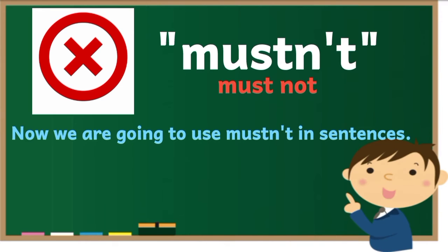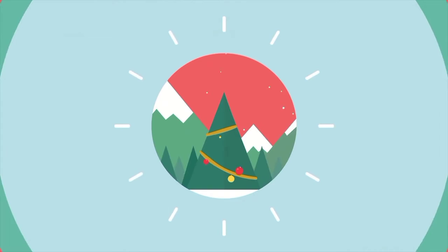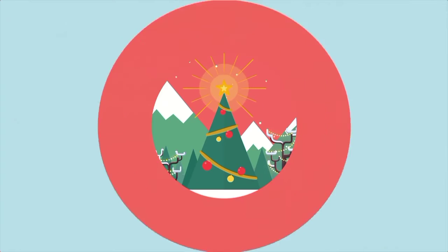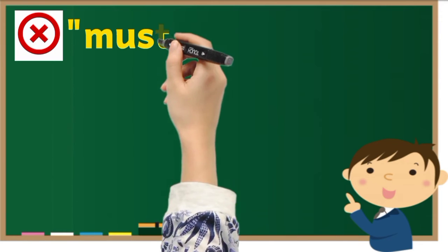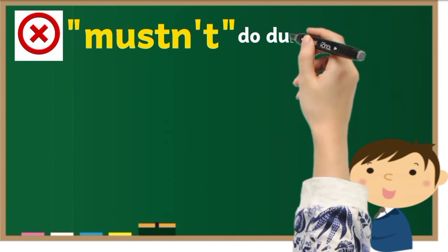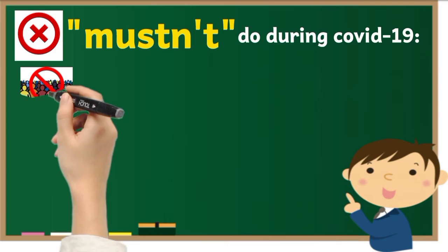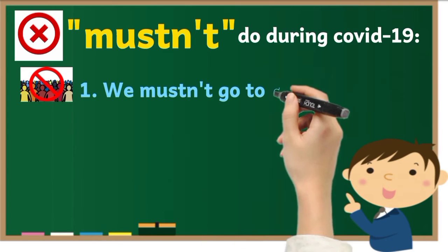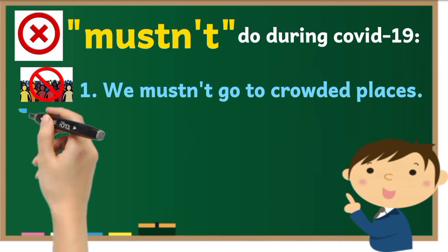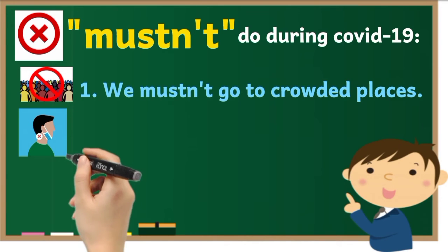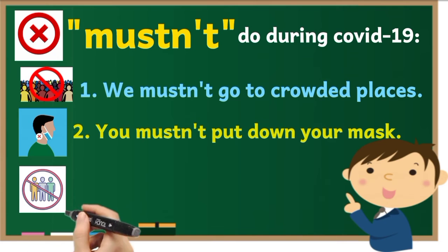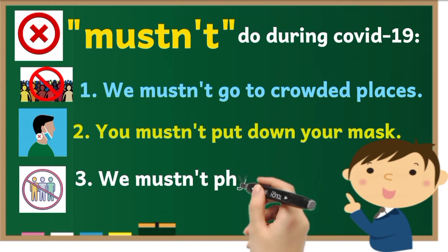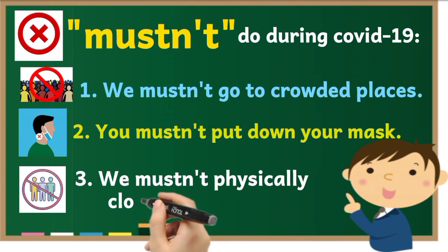Now we are going to use 'mustn't' in sentences, so watch carefully. Things we mustn't do during COVID-19: 1. We mustn't go to crowded places. 2. You mustn't put down your mask. 3. We mustn't be physically close to each other.